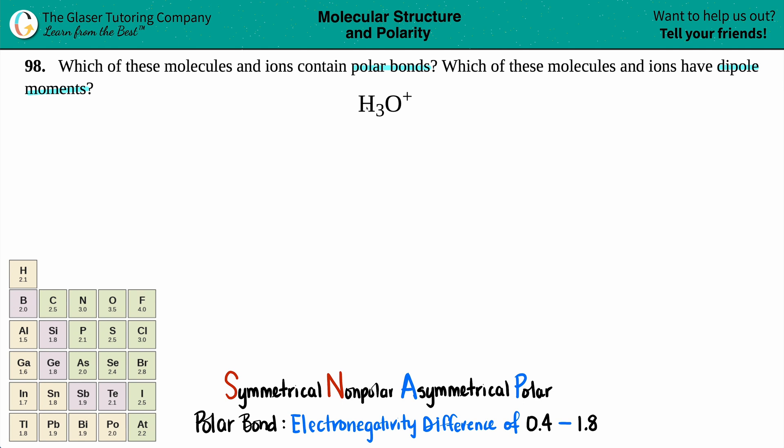So I guess we'll first work with whether H3O+ or hydronium has polar bonds. Now, when I'm looking at H3O+, do you see any bonds? Because I don't. If we're going to answer a question as to what bonds it has, I want to see the bonds.